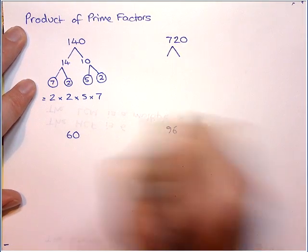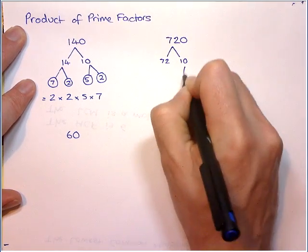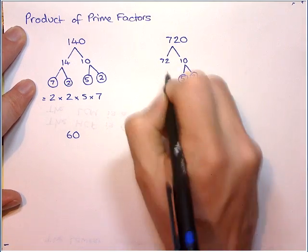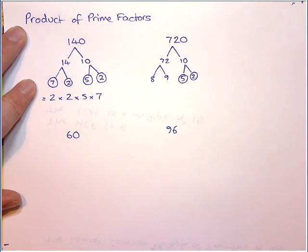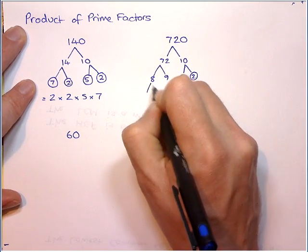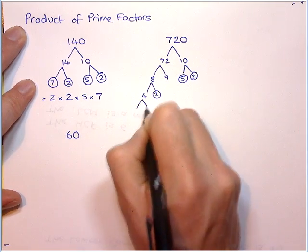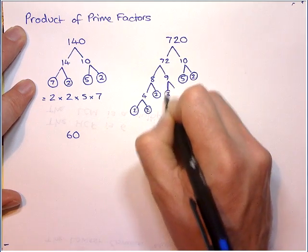So again this ends in a 0. I'll show you some more in a minute that don't. So 72 and 10, this is the same as last time, so I'm just going to pop the 5 and 2 there. So I know that 8 times 9 is 72, but neither of those are prime, so we're going to keep going. So that's 4 and 2, and 4 is 2 times 2. And to make 9, it's 3 times 3.